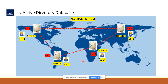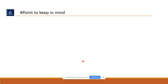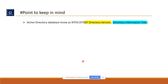Whatever changes you make will replicate throughout all domain controllers. There are many things to cover about ntds.dit — like NTDS partitions, sites and services — which I'll cover later. For now, some key points to remember: ntds.dit stands for New Technology Directory Service — that's the NTDS part — and .dit stands for Directory Information Tree.